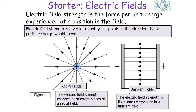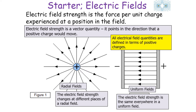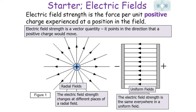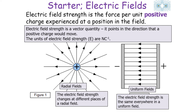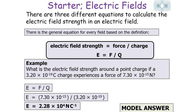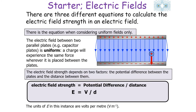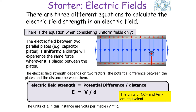Electrical field strength is a vector quantity pointing in the direction a positive charge would move, since we define all electrical field quantities in terms of positive charges. The force per unit positive charge experienced at a position in the field gives units of newtons per coulomb, or NC⁻¹. The general equation for any electrical field is E = F/Q. For uniform fields only, E = V/d, where V is the potential difference between two plates and d is the distance, giving units of volts per metre. Newtons per coulomb and volts per metre are equivalent, but volts per metre is only used for uniform fields.